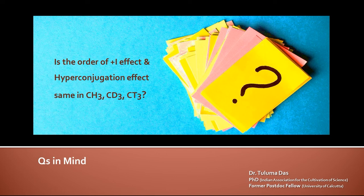First we will see individually what is +I effect and what is hyperconjugation effect. For details of hyperconjugation effect you can watch the previous video. So let's see first what is +I effect — it is the polarization of a sigma bond.